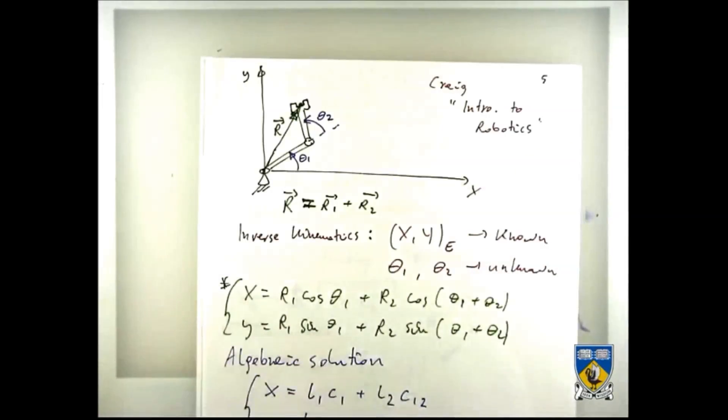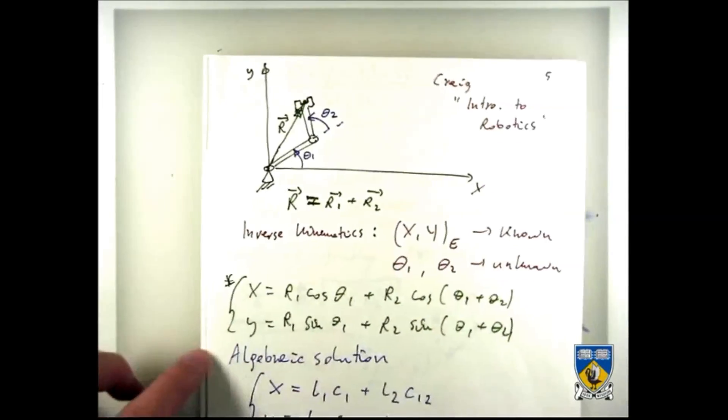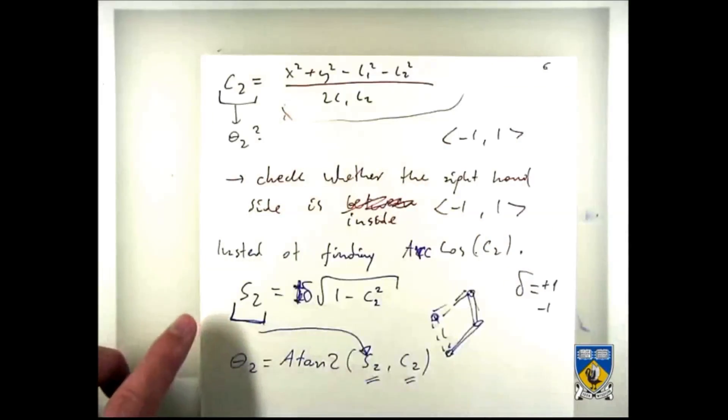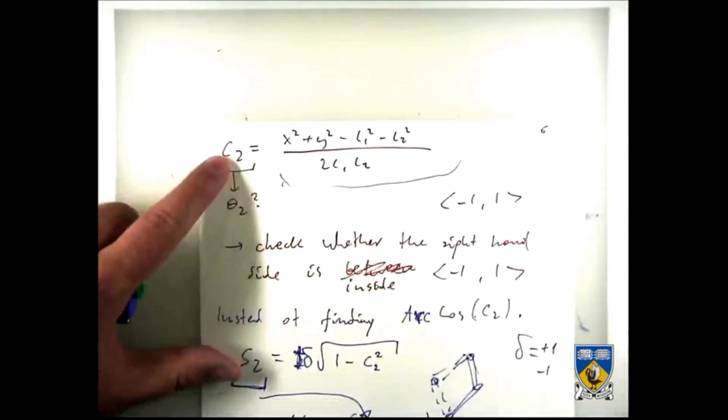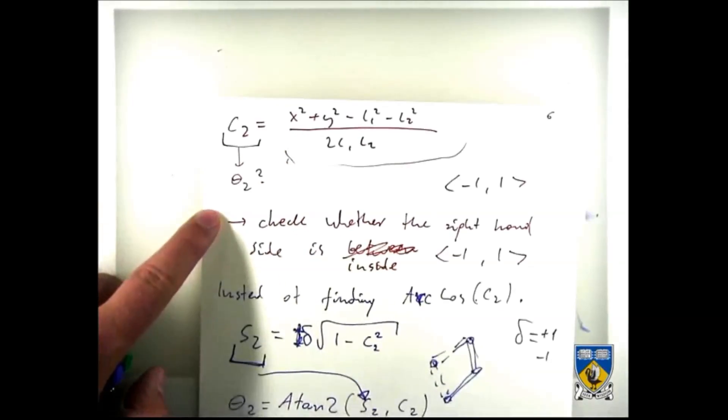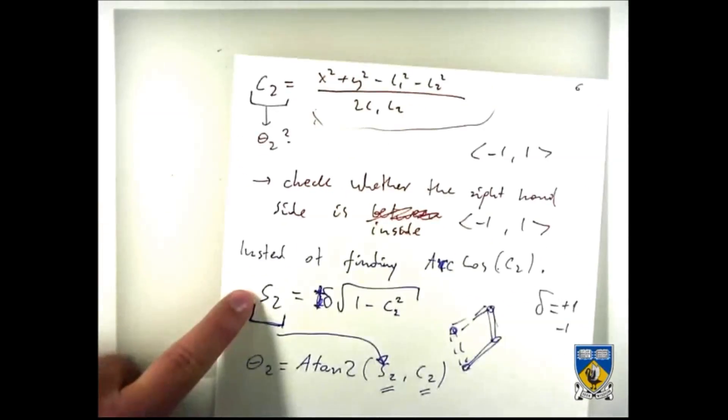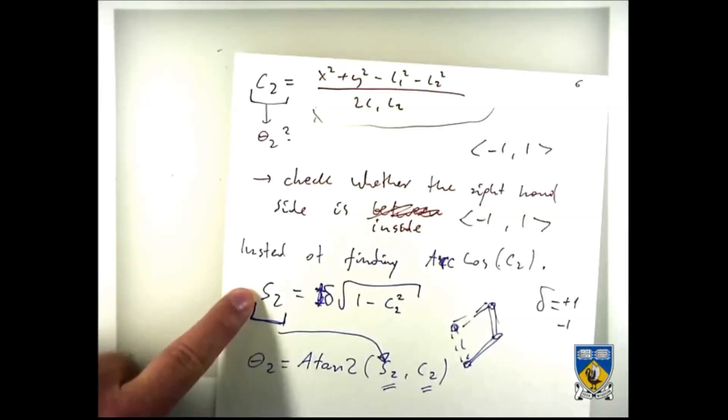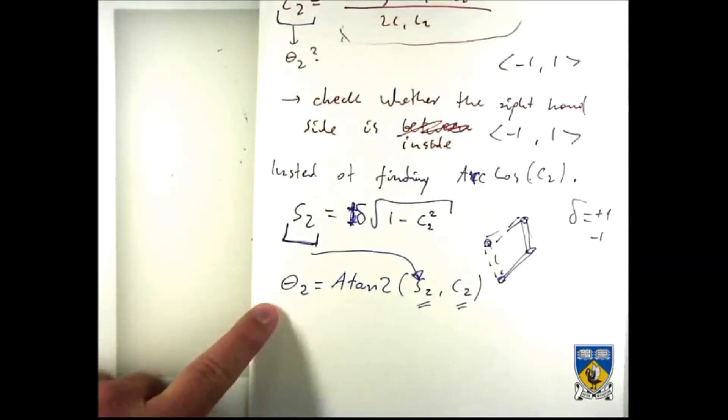And to solve this now on a computer, you just need one line for cosine, another line for checking, another line for computing sine and deciding elbow up or elbow down, and then another line to extract the angle.